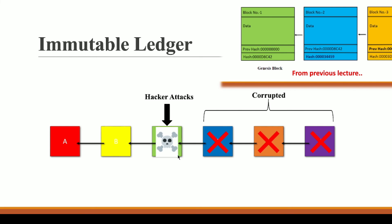Blockchain is immutable because changing any one block affects all the blocks that come after it. Some of you might be wondering what happens if someone tries to change the first or last block — we will cover those cases in upcoming videos. For now, you should understand how immutability works when someone tries to change a block in the middle of the chain.